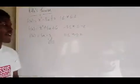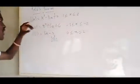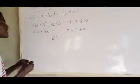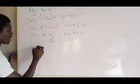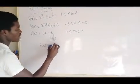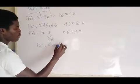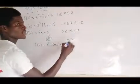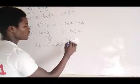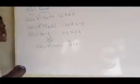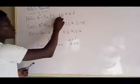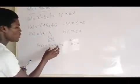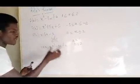So let's check if this function satisfies Rolle's Theorem and find the points. Our f(x) = x² − 3x + 2, our a is 1 and our b is 2. We've established that this function is differentiable and continuous.